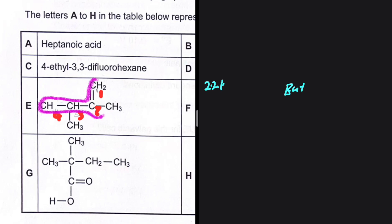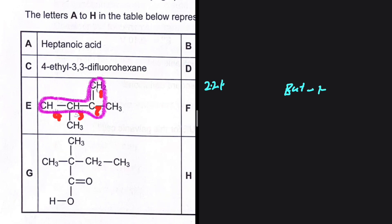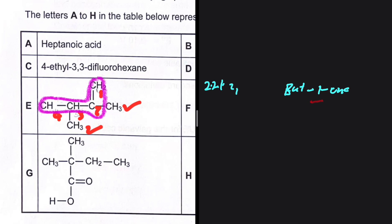This is our longest carbon chain — but-1-ene — because our functional group is on the first carbon. We also have methyl groups: one methyl is on the second carbon and one is on the third carbon, giving us 2,3-dimethylbut-1-ene as the IUPAC name of compound E.